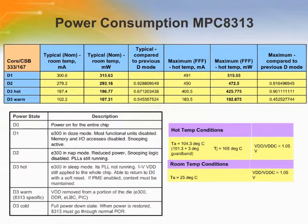The power consumption of the MPC8313E processor is organized by power state. D0 is the normal operation state where power is supplied to the entire chip. The D1 state is similar to standby and runs with the E300 core in DOZE mode. In this state, most functional units are disabled as well as memory and I/O accesses, while snooping remains active.